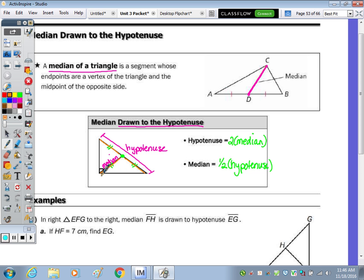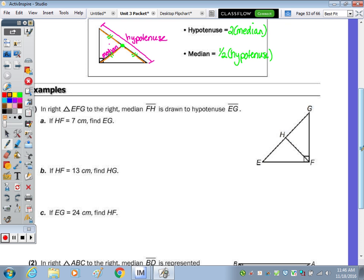Let's take a look at the first picture. Right triangle EFG to the right has a median FH which is drawn to hypotenuse EG. So if HF is seven, let's label this seven. Find EG. Well, we know that it's half the hypotenuse, so if this is seven, EG is going to be two times seven, which is fourteen. We also know that if this segment's seven, this segment's going to be seven, and this segment's going to be seven. They're all the same, so therefore seven and seven is fourteen. Another way to do it.